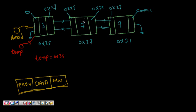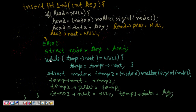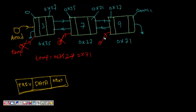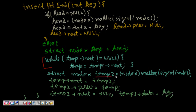While temp->next is not null, temp moves to the next node. Starting at 0x35, temp->next is 0x27 (not null), so temp becomes 0x27. Then temp->next is 0x71 (not null), so temp becomes 0x71. Now temp->next is null, so the loop stops. After this traversal, temp points to the last element of the doubly linked list.